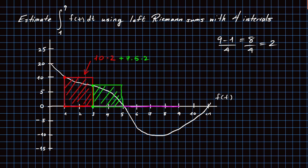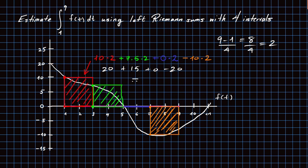For the next interval, 5 to 7, the value of the function at the left-hand endpoint is actually 0, so there's no contribution: 0 times 2. For the last interval, 7 to 9, the left-hand endpoint value is -10 — it's below the axis, so we count it negatively: minus 10 times 2. Summing up: 20 plus 15 plus 0 minus 20. The 20s cancel, leaving just 15.